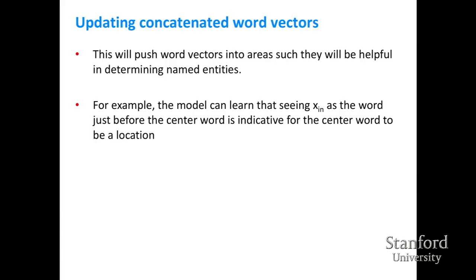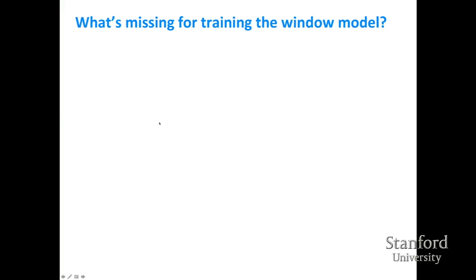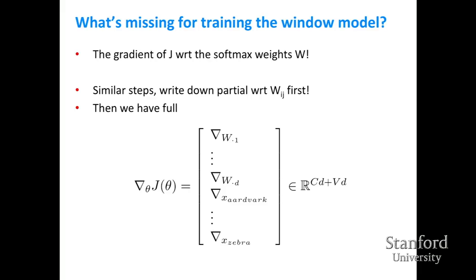As we train the window classifier for sentiment, we push positive words in one direction. For named entity recognition, the model can learn that seeing 'in' just before the center word is indicative of that center word being a location. What's still needed for the full window model is the gradient of J with respect to the softmax weights W, which requires similar partial derivative steps.